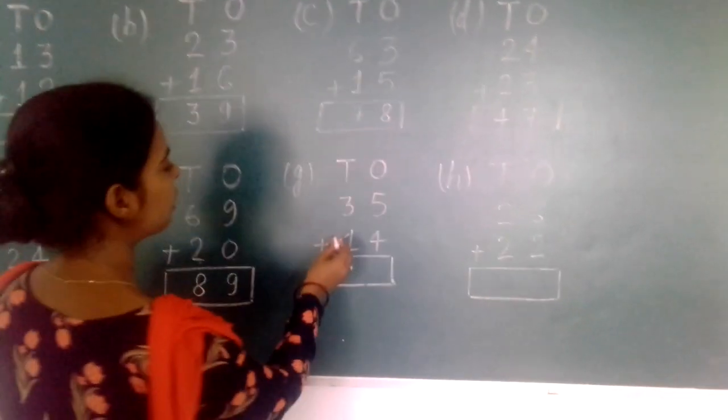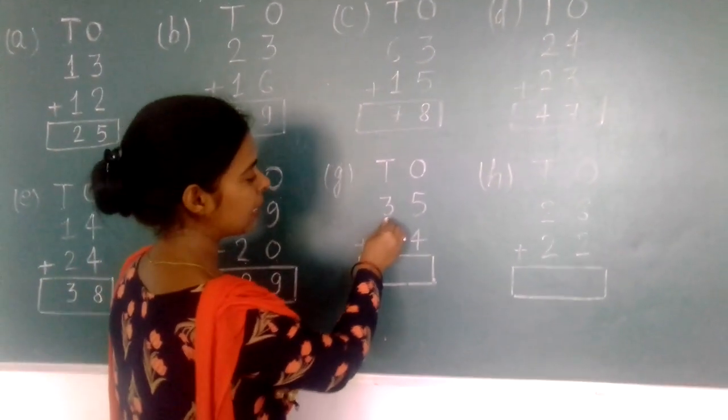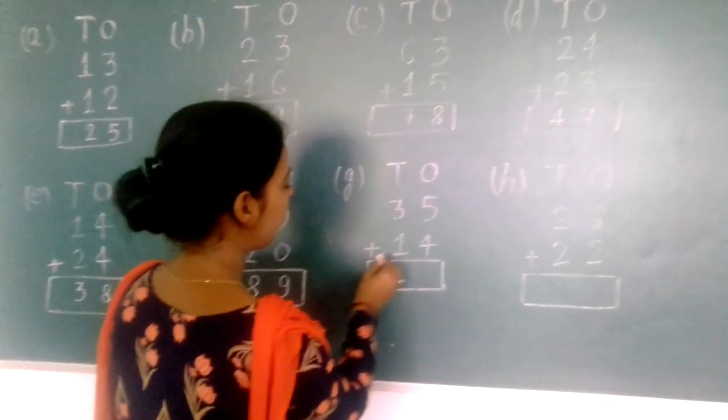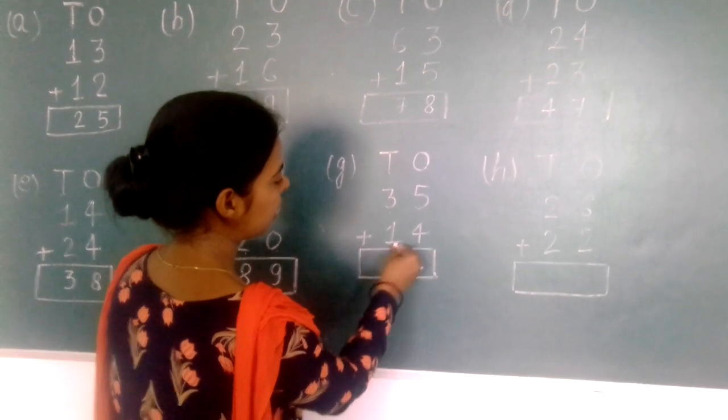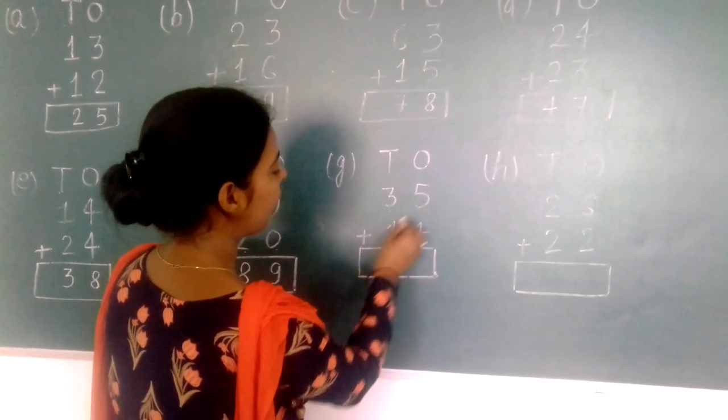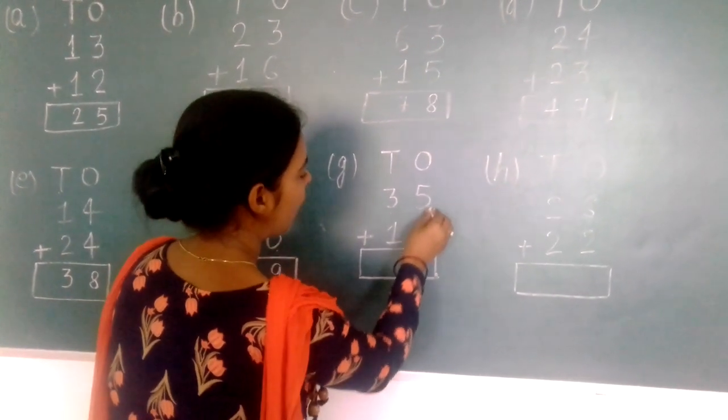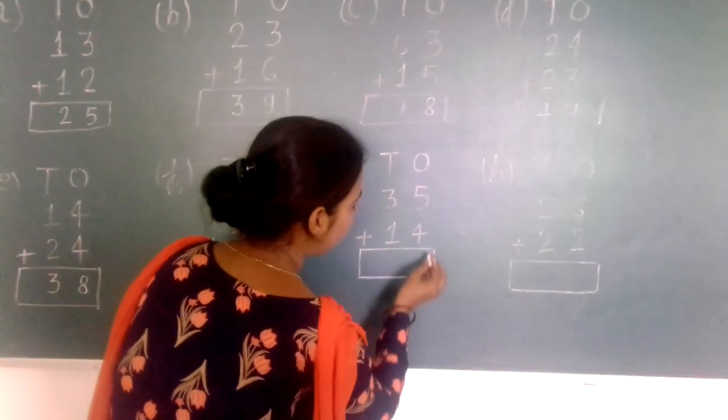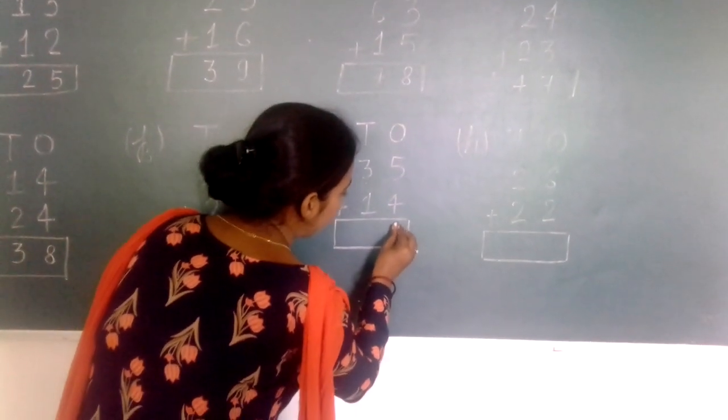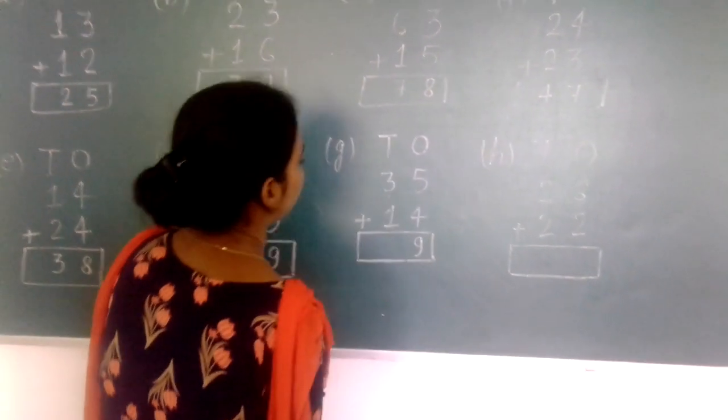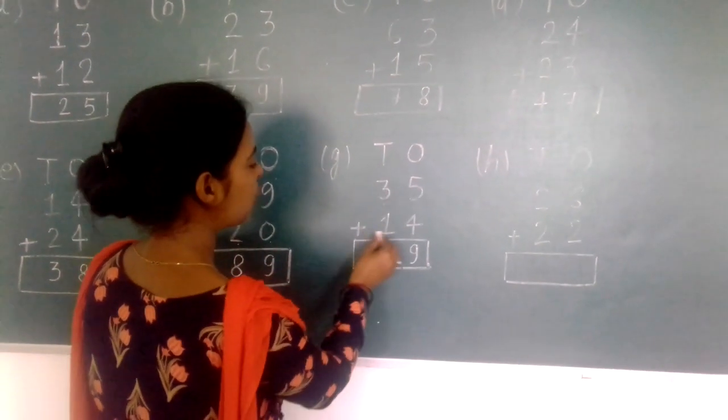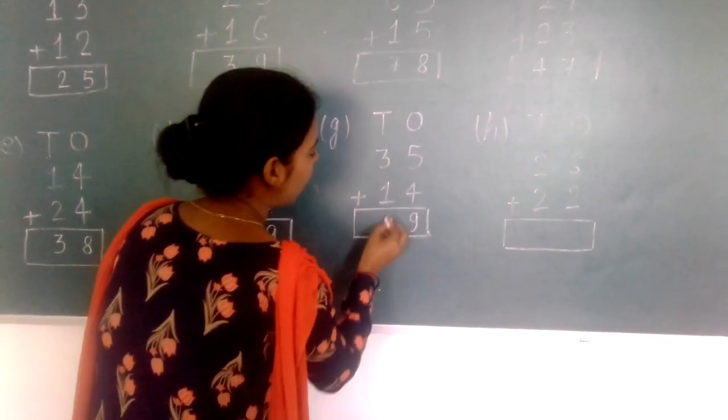Next: three tens, five ones (35) plus one ten, four ones (14). Five plus four equals nine. Three tens plus one ten equals four tens.